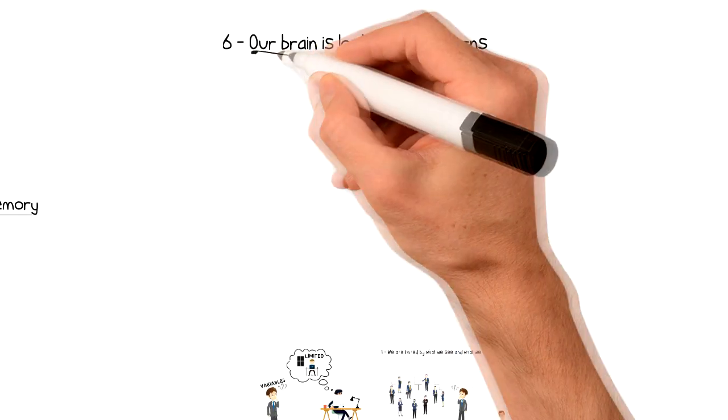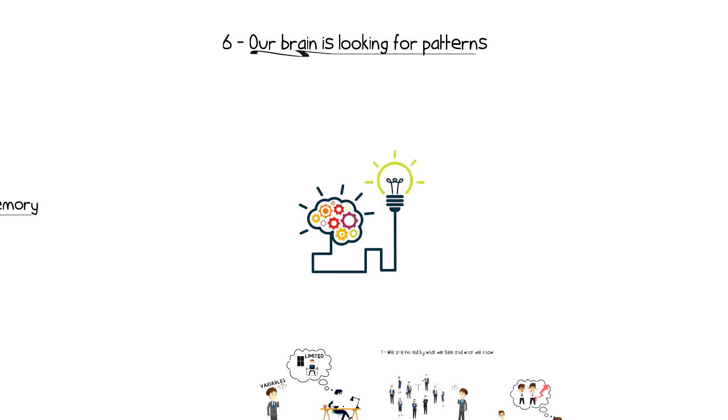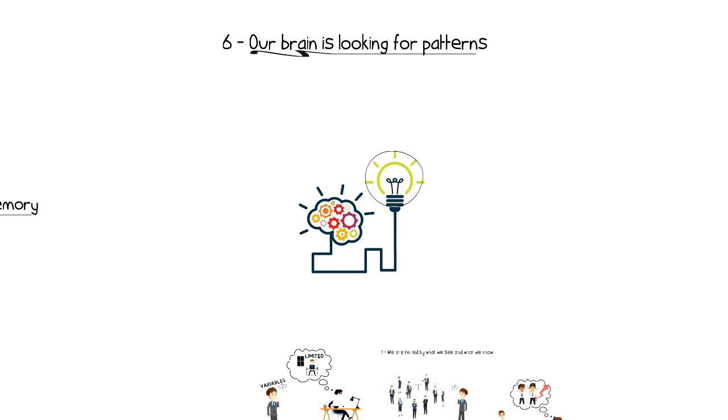Number six, our brain is looking for patterns. Another thing that our brain likes to do is looking for patterns. This again makes it easier for us to process information. When we read, we don't look at each individual letter. Instead, we look at the beginnings of the words and sentences and combine them together.